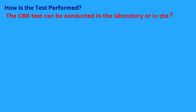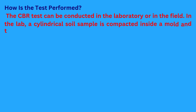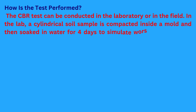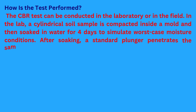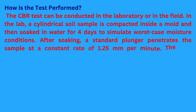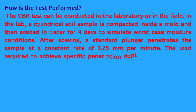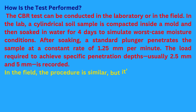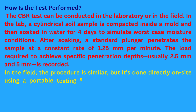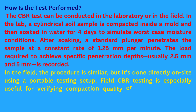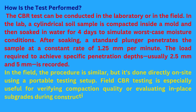The CBR test can be conducted in the laboratory or in the field. In the lab, a cylindrical soil sample is compacted inside a mold and then soaked in water for four days to simulate worst-case moisture conditions. After soaking, a standard plunger penetrates the sample at a constant rate of 1.25 millimeters per minute. The load required to achieve specific penetration depths — usually 2.5 millimeters and 5 millimeters — is recorded. In the field, the procedure is similar but done directly on site using a portable testing setup. Field CBR testing is especially useful for verifying compaction quality or evaluating in-place subgrades during construction.